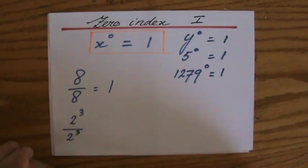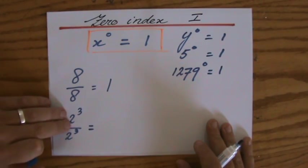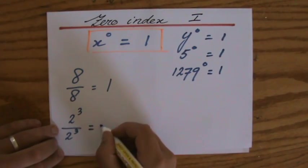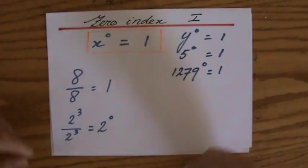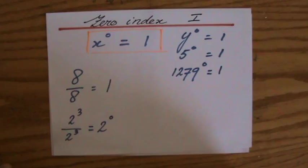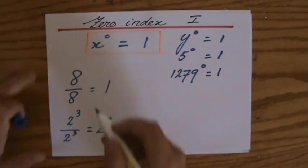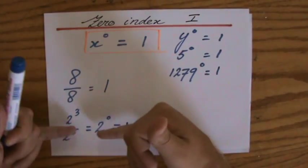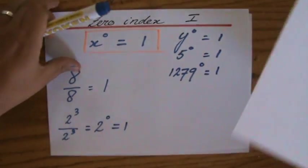If I now apply the second law of indices — which says that when you're dividing and the bases are the same, you subtract the indices — then 3 minus 3 is 0. So the second law of indices tells us 2 to the power 3 divided by 2 to the power 3 equals 2 to the power 0, which equals 1, because 8 divided by 8 is 1. We've just seen that anything to the power 0 equals 1.